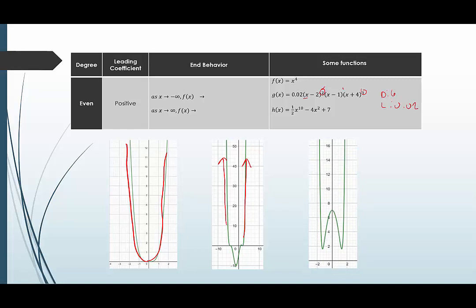Our last example of the three positive evens is a degree-10 polynomial with leading coefficient one-half. We see the same thing: the graph goes up on the left and up on the right. As x is getting smaller and smaller, f of x is getting bigger and bigger — it approaches infinity. As x is getting bigger and bigger, f of x also approaches infinity. Anytime you have an even-degree polynomial with a positive leading coefficient, this will be the end behavior for all of them.